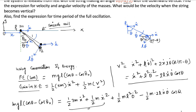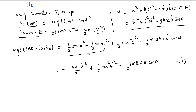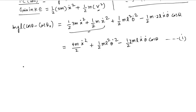The smooth rail means the force in the x direction is zero, which means linear momentum in the x direction is conserved and remains constant.